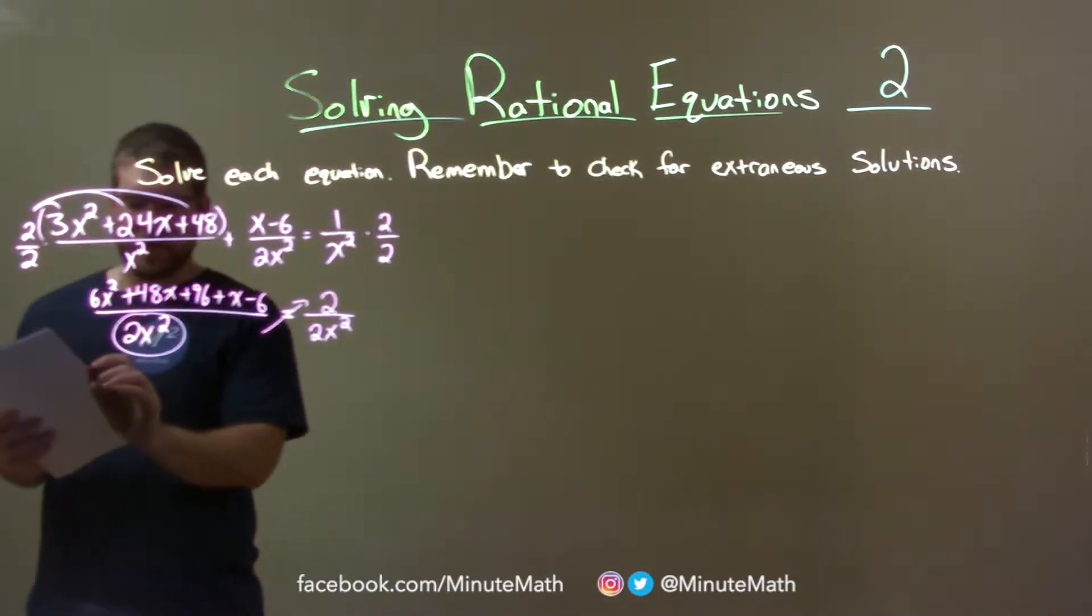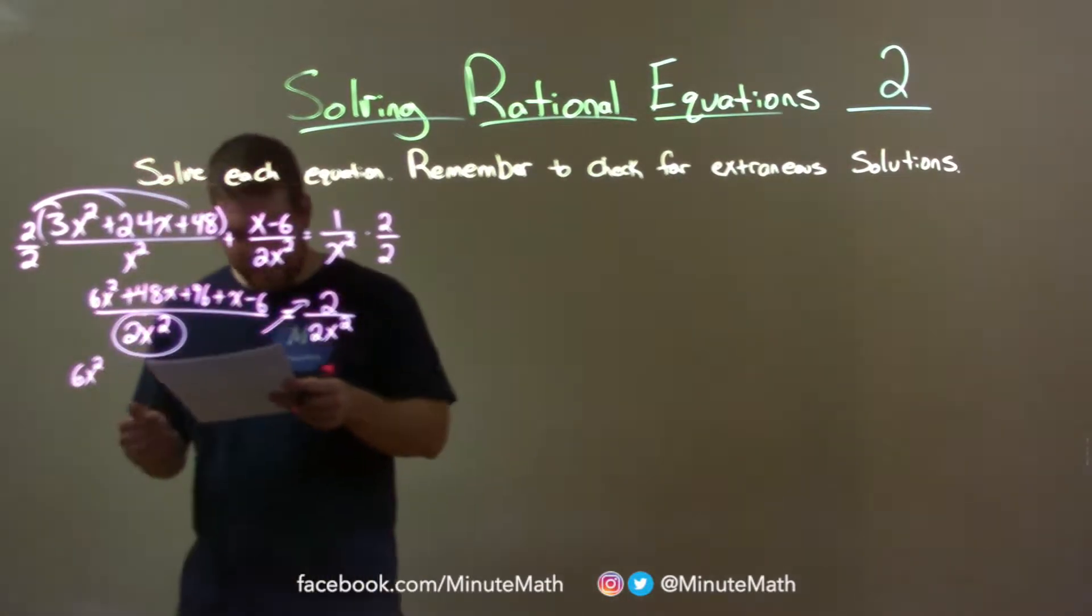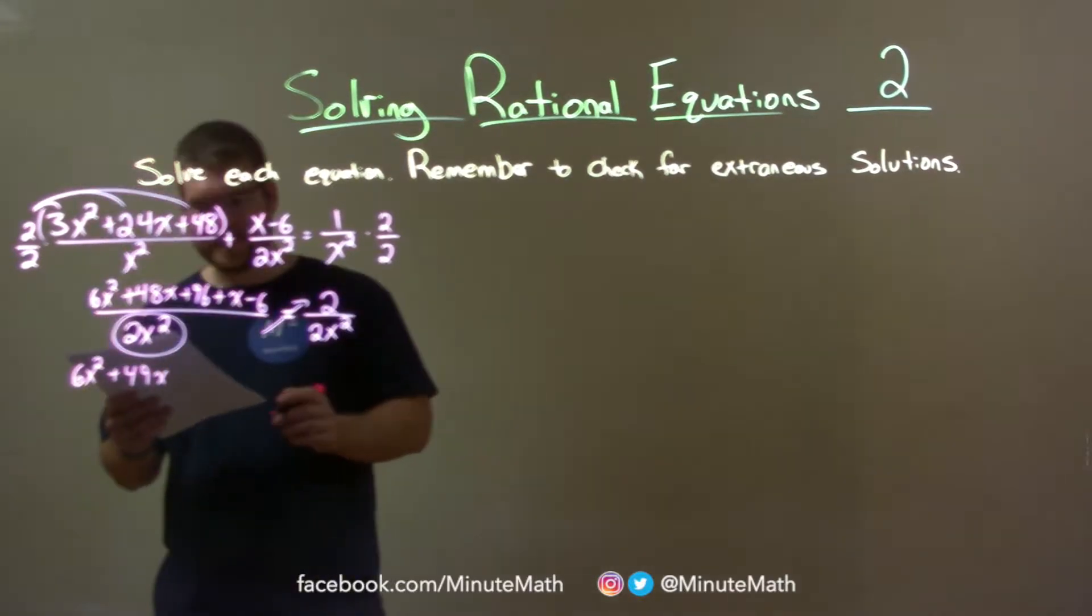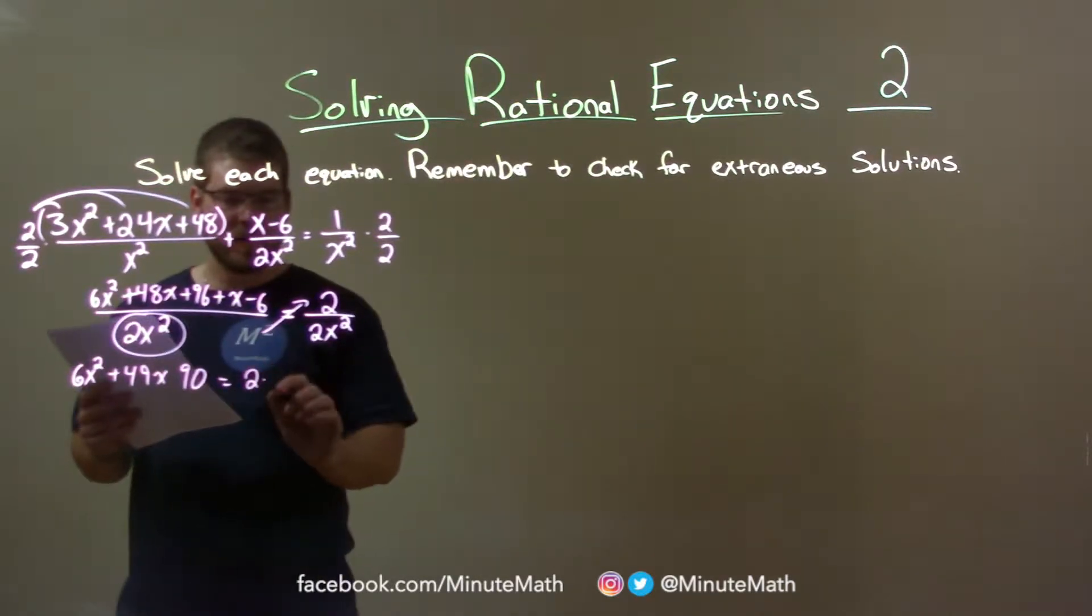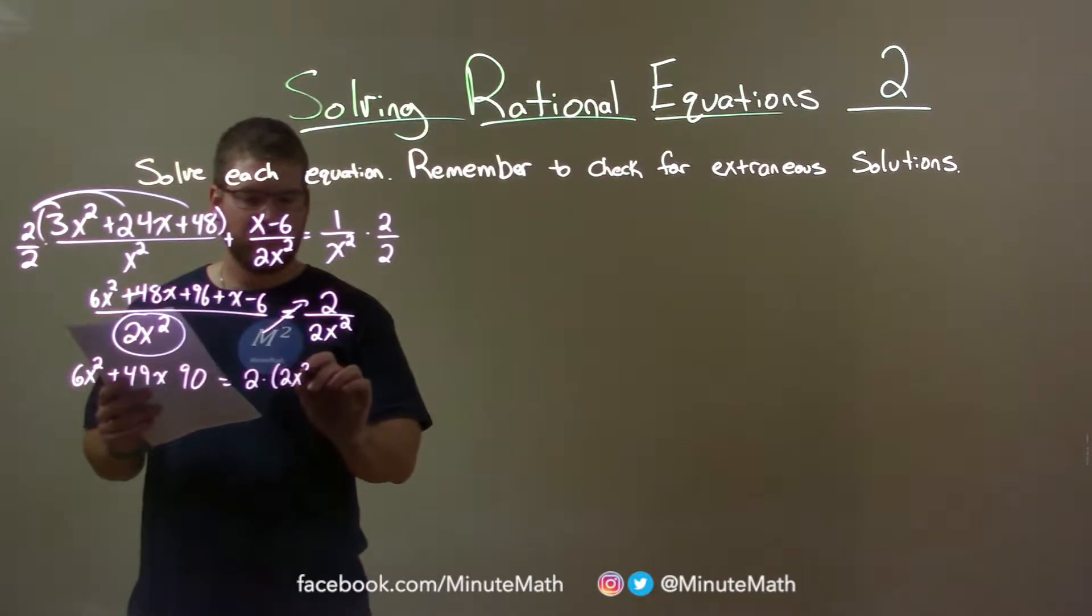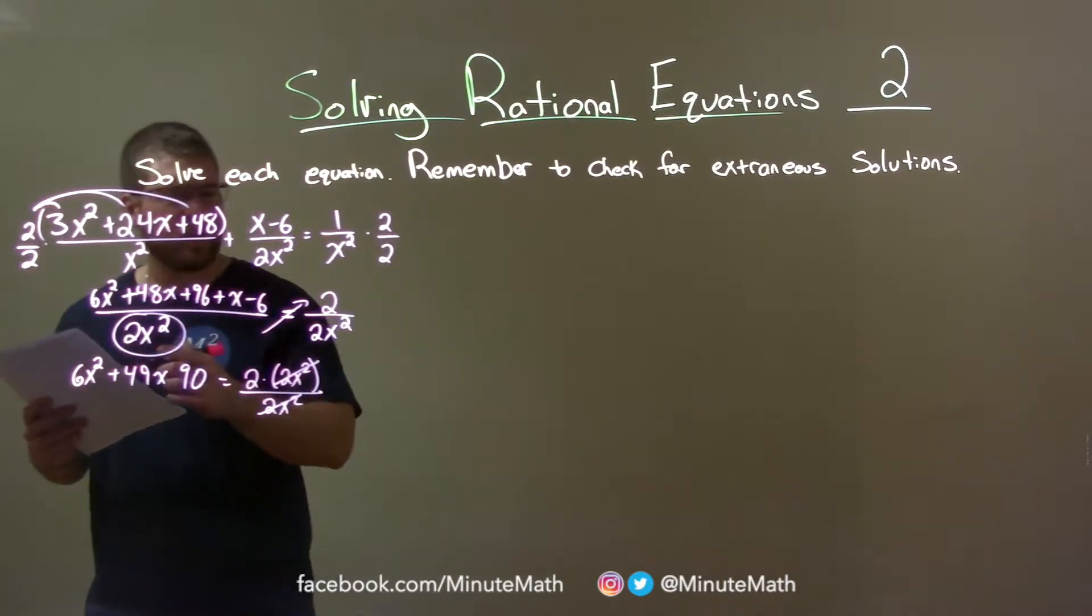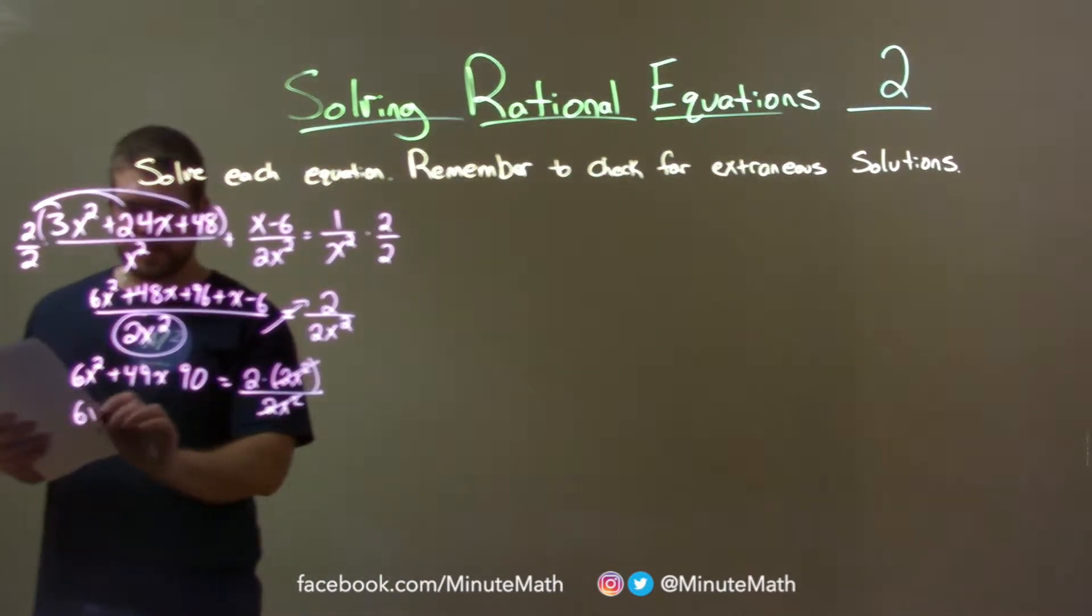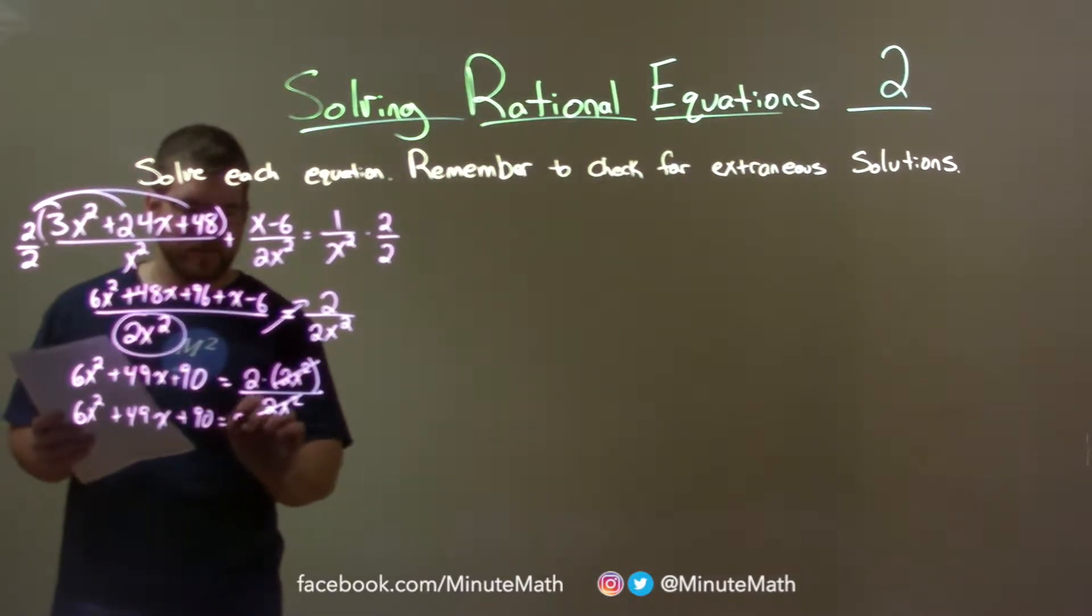Up here, let's simplify what we can. So we have 6x squared, and then 48 plus x is 49x, and then 96 minus 6 is 90. So you have 90 here. And that's equal to 2 times 2x squared over 2x squared. Now these will cancel, and I kind of planned that ahead of time where I wanted to go with it.